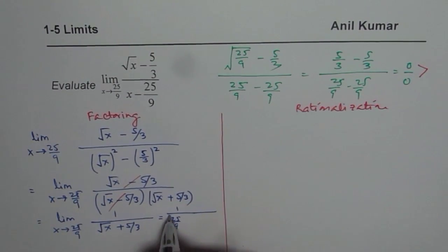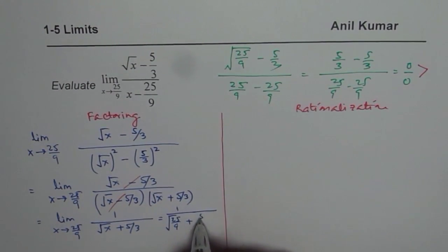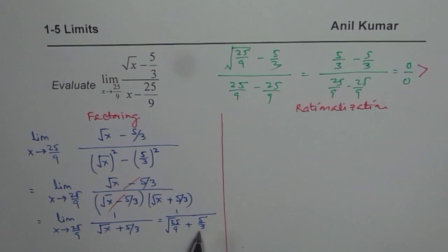25 over 9 plus 5 over 3, right? Now when you open this, you get 5 over 3. So you get 2 times 5 over 3.